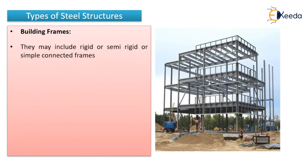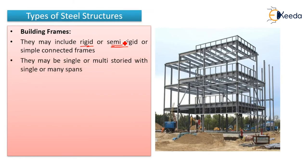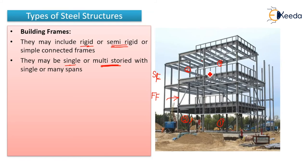The next type of steel structure is the building frame. Building frames may include rigid, semi-rigid, or simply connected frames — that is a separate chapter. Just remember that building frames may be rigid, flexible, semi-rigid, or simply connected. They may be single or multi-storied — for example, ground floor plus first plus second floor making it G+2 — and they may have single or multiple spans with columns in between.